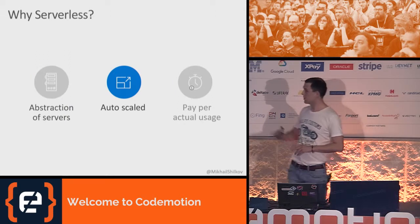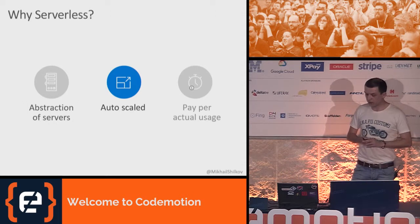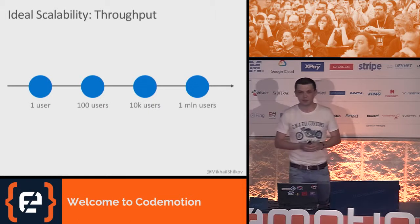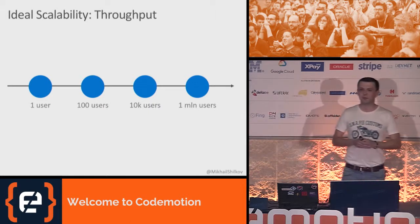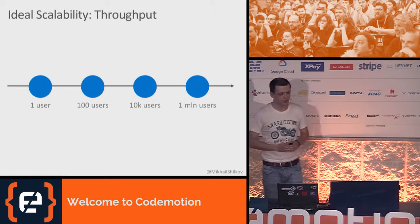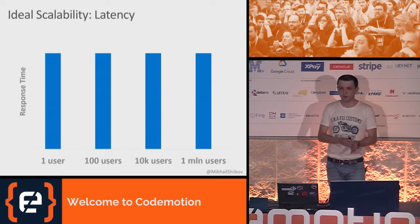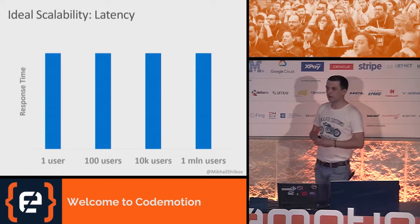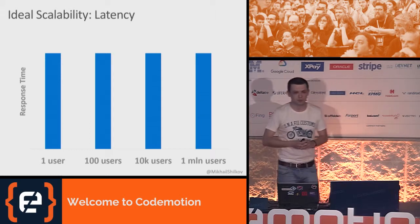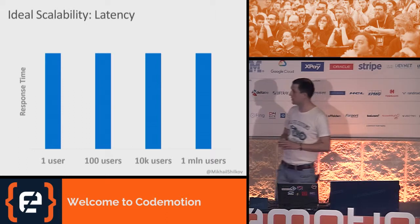In this talk I'm going to focus on auto-scale, because we are talking performance. The ideal situation — what cloud providers are selling to us — is that if you have a serverless application and you have only one user, it works; if you have 100, it works; if you go up to a million, it still works. That's about throughput, how many requests you can handle. And while your application is growing, you should ideally get the same latency — the response time should not bump up to minutes. It should stay constant in the ideal case. So that's what we are going to check today.